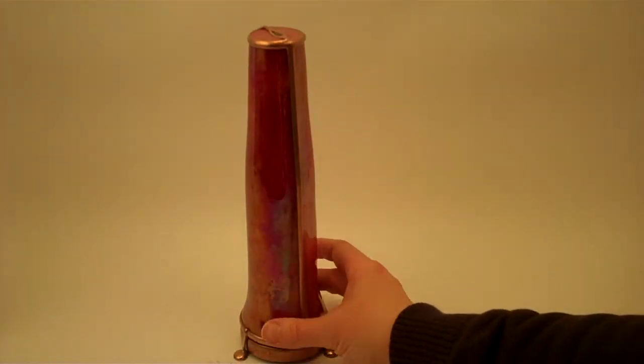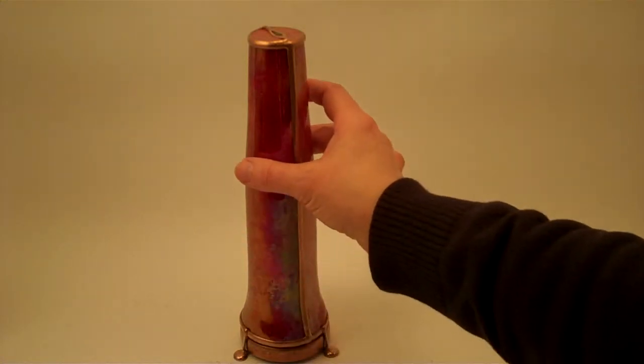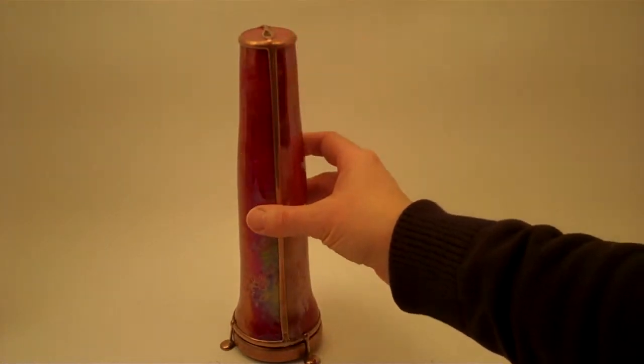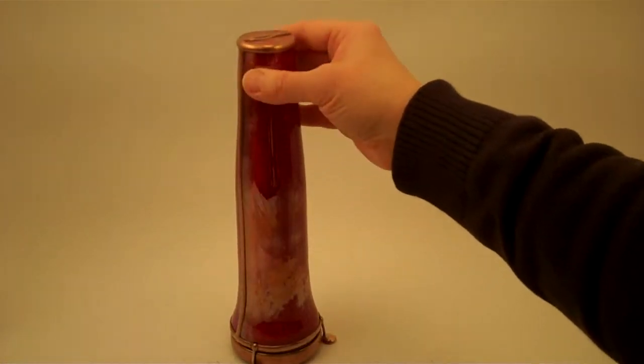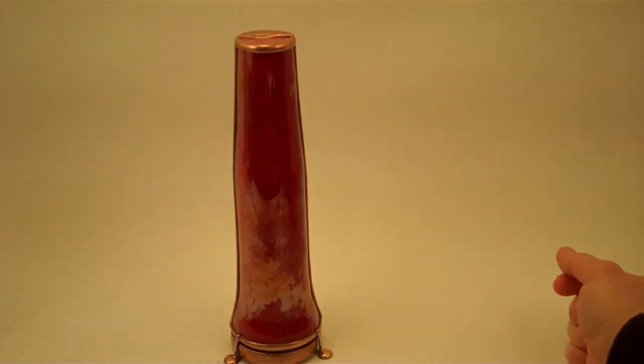It flares out a bit towards the object chamber, and then bowls out just slightly, and then curves back in towards the eyepiece.